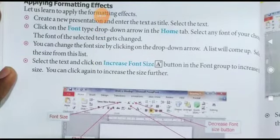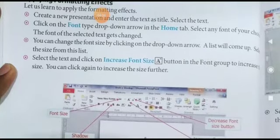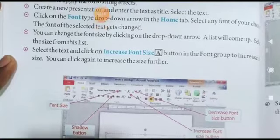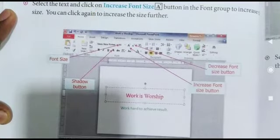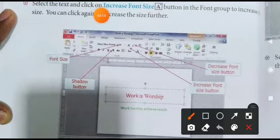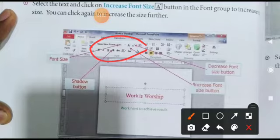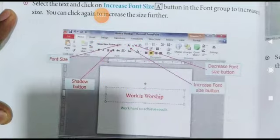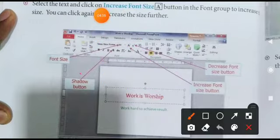Select karne ke baad, click on font type drop-down arrow in the Home tab and select any font. Jaise hi aap select karne ke baad Home tab ke is area mein jaate ho, font size badha sakte ho — increase font size. Bade 'A' par click karoge toh size badhta jaayega, chote 'A' par click karoge toh size chhota hota jaayega. Yahan pe shadow button bhi diya hua hai.